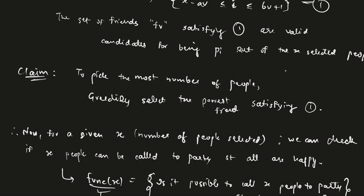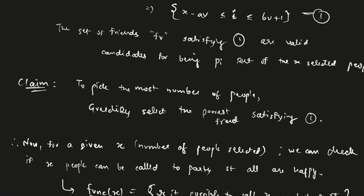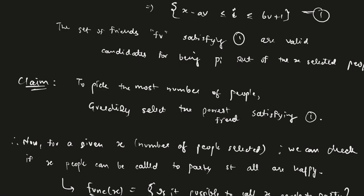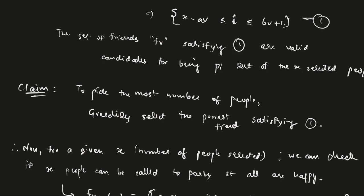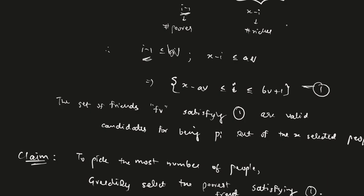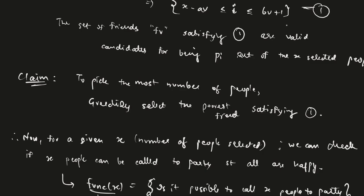So now our claim is that to pick the most number of people, that is the objective of the problem, we will need to greedily select the poorest friend satisfying this inequality. What I mean by this is, if for example, we encounter a person satisfying this inequality, we will immediately consider him to be a part of the set S and move on with our consideration to the next index.